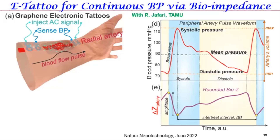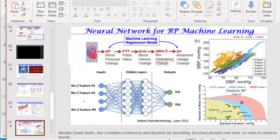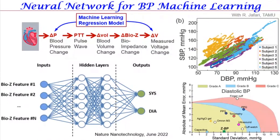Equations alone aren't sufficient for clinically accurate quantitative blood pressure, so this is where Rouzbeh Jafari's machine learning expertise comes in. We extract many features from the blood pressure signal using large training datasets from many subjects. At the end of training, we obtain systolic and diastolic blood pressure values. There is an IEEE standard for mobile blood pressure readings, and we can achieve the highest level of accuracy — including beat-to-beat quantitative blood pressure recordings with clinical accuracy.